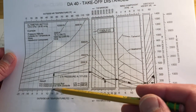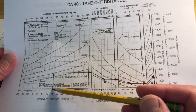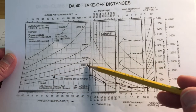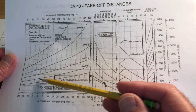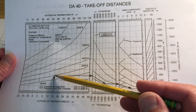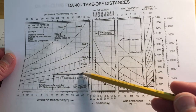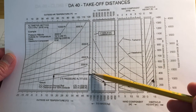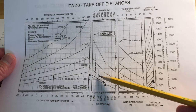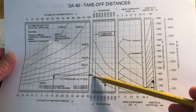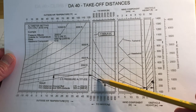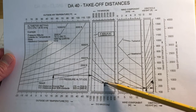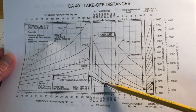So what they do is they start at the temperature of 15°C and draw a straight line up to the pressure altitude of 2,000 feet. This line represents 2,000 feet. They draw a straight line over to the next reference line and then follow these lines parallel until they get to the weight of the aircraft, which in this case was 2,200 pounds.